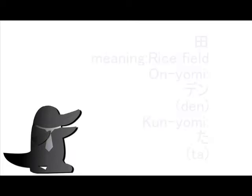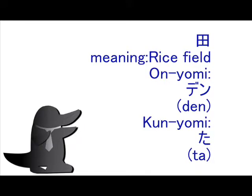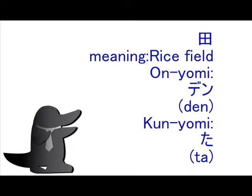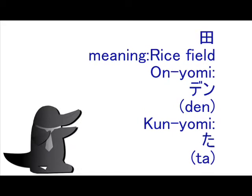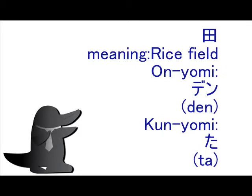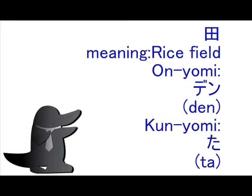The main meaning of this kanji is 'rice field.' In on'yomi reading you can read 'den,' and in kun'yomi reading you can read 'ta.' There is no okurigana for this kanji. In Japan, we study this kanji in first grade at elementary school.